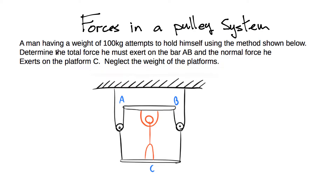Here's the problem. We have a man — buddy in red over here — who has a weight of 100 kg. He attempts to hold himself using the method shown. They ask for two things: determine the total force he has to push up on bar AB, and also the normal force on platform C. To make this problem a little bit easier, we're going to neglect the weight of the platforms — massless platforms — and just calculate the force he needs to push up and the normal force on the platform.